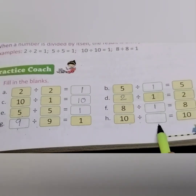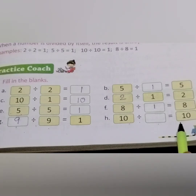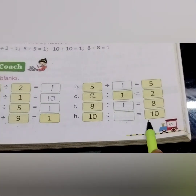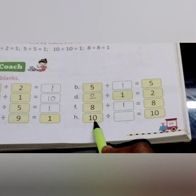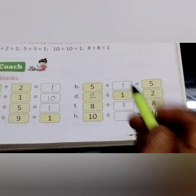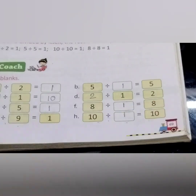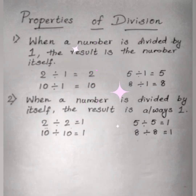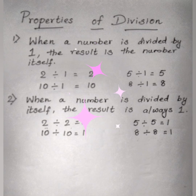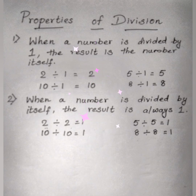10 divided by dash equals 10 — you have to get the same number, so it is 1. Now, we have learned the properties of division. When a number is divided by 1, the result is the number itself. When a number is divided by itself, the result is always 1.